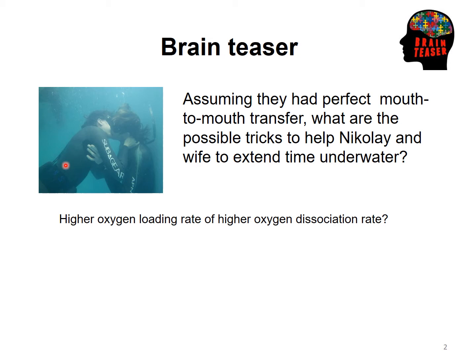So now, if they need a higher oxygen loading rate, should the temperature go higher or lower? The answer is lower, so that the oxygen saturation curve will shift towards the left-hand side, increasing hemoglobin affinity for oxygen. But the temperature cannot be too low, as that would cause hypothermia and increased metabolic needs — more oxygen consumption. So you can suggest experimenting with cooler temperatures to find the optimum.